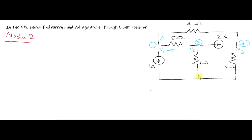Now analyze Node 2. The elements coming to Node 2 are this 1 ohm, then V2 minus V1 divided by this 5 ohm, and this 2 ampere current source. Here also I am assigning current direction as leaving. However, this 2 ampere current is coming towards this node, so you must account for that. You can write V2 minus V1 divided by 5 plus V2 divided by 1 equal to 2 ampere.